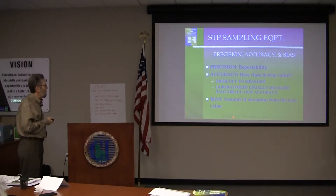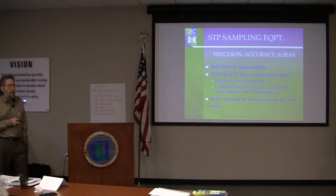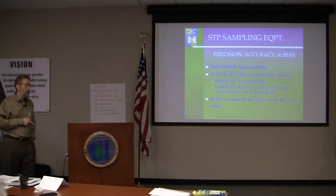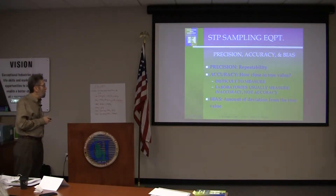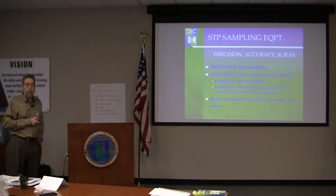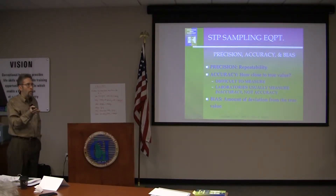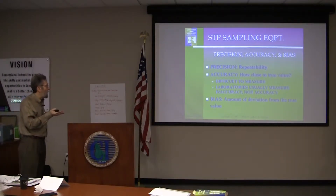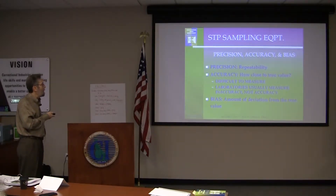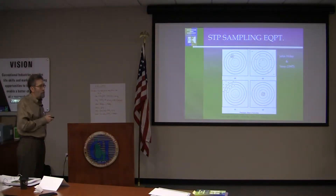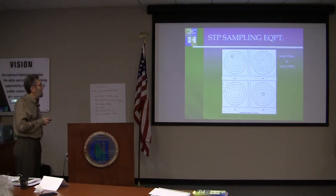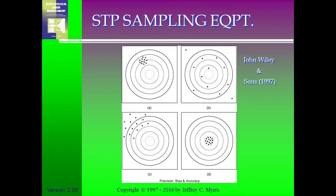Bias is defined as the amount of deviation from the true value. The problem with sampling bias is that we never know if it's high or low. Sometimes if you have a machine out of tune, you can detect a bias and maybe adjust in retrospect — always high, always low, always high in a certain range. The goal is to have high precision, high accuracy, and low bias.